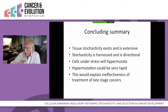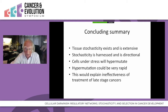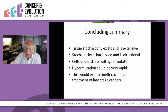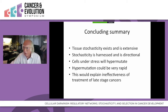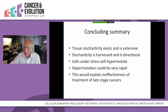To conclude: tissue stochasticity exists and is very extensive. The physiological control mechanisms enable that stochasticity to be harnessed and used, so the process of development is directional. Third, cells under stress will naturally hypermutate, and that hypermutation could be extremely rapid. That would in itself explain the ineffectiveness of treatment of late-stage cancers that we heard about at the very beginning from Azra Raza in her presentation to this symposium. Thank you very much for having me, and I look forward to any questions.